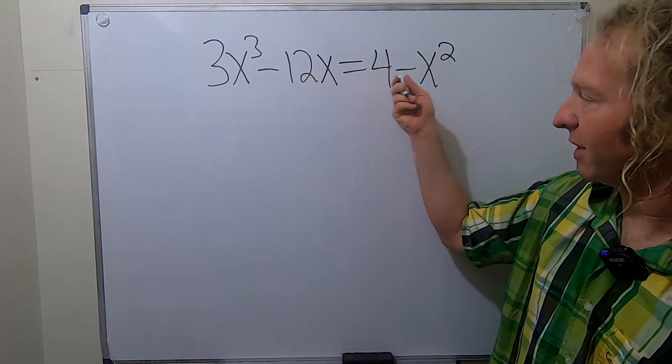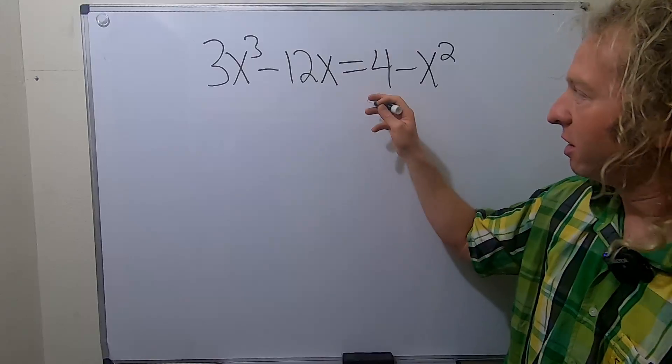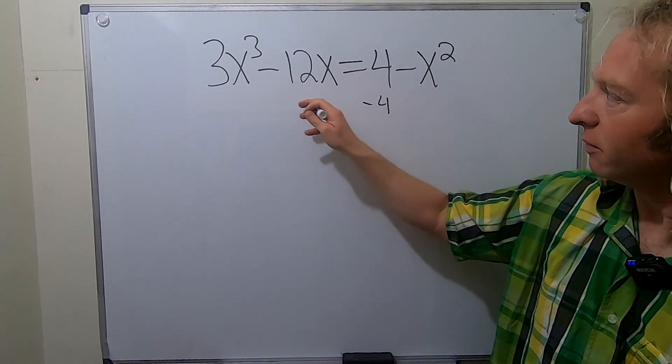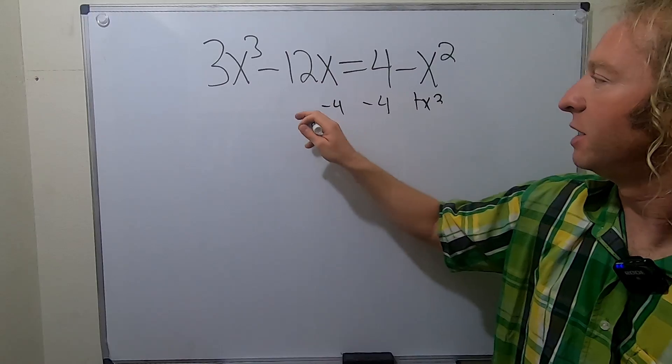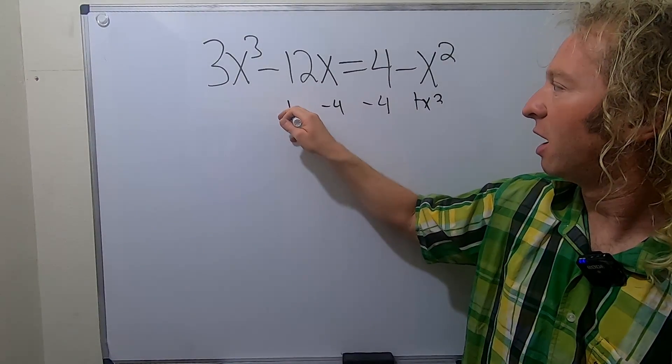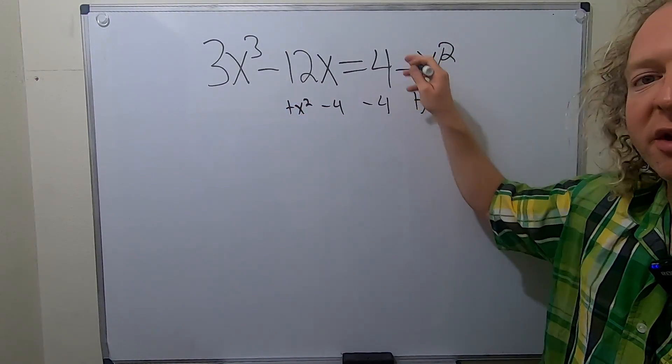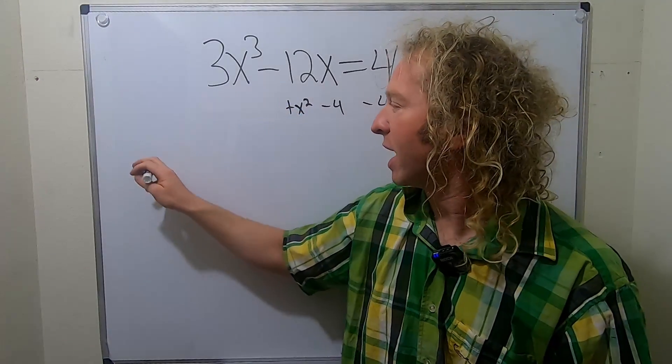So we'll start by subtracting the 4 and adding the x squared to both sides. So I'll put a minus 4 here, and a minus 4 here, and a plus x squared here, and a plus x squared here. Okay, so these cancel, these cancel, so let's rewrite what we have.